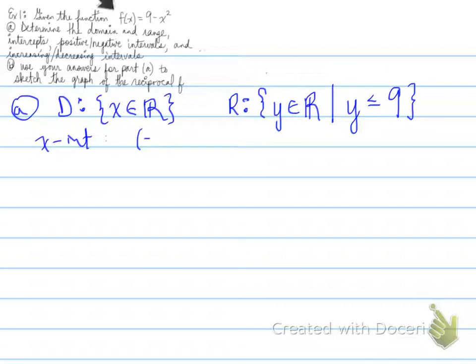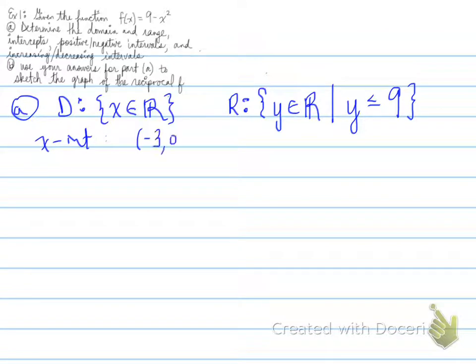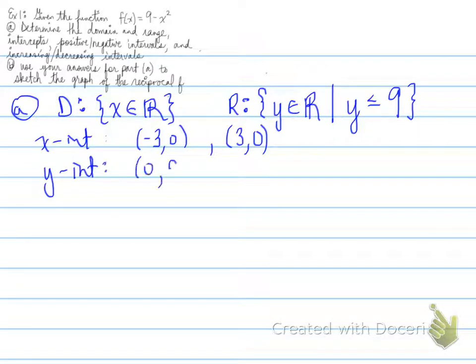Next we're asked for the intercepts. The x-intercepts are when the function equals 0 — that would be at x equals negative 3 and positive 3. You can get those values by factoring as a difference of squares. The y-intercept is (0, 9), which turns out to also be our vertex.